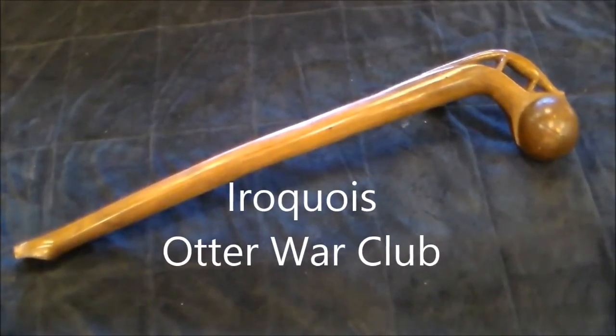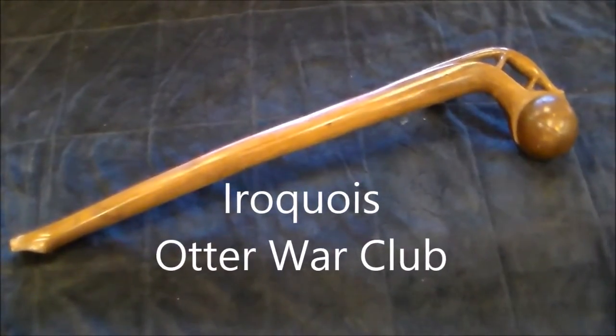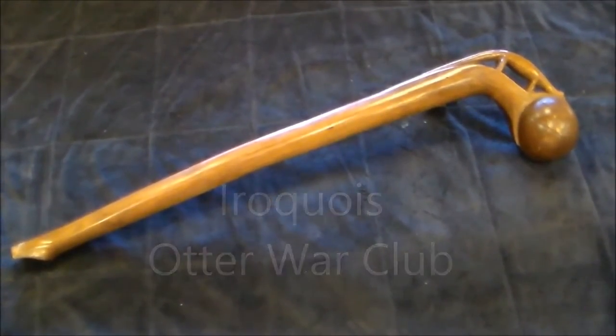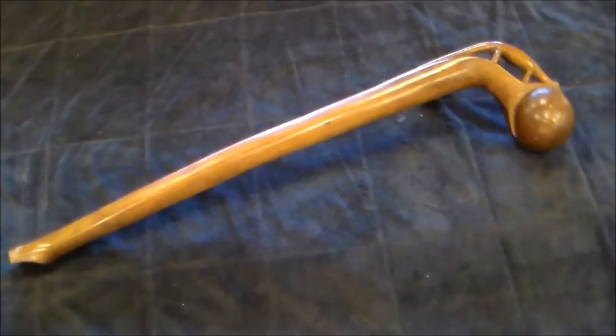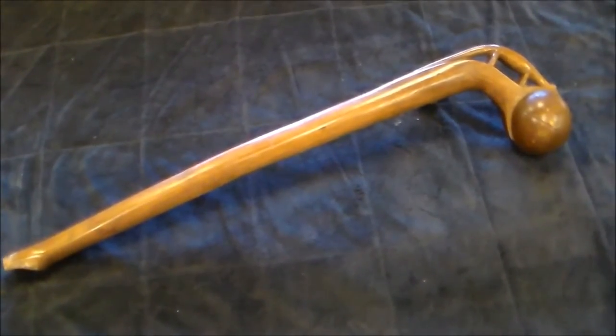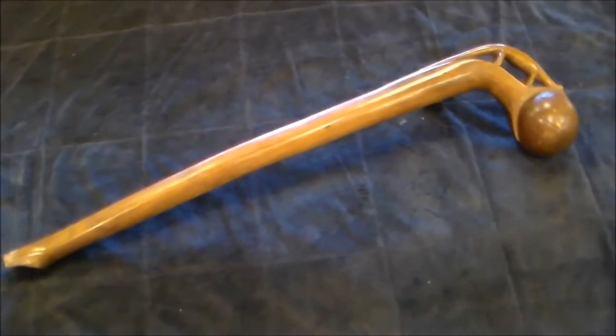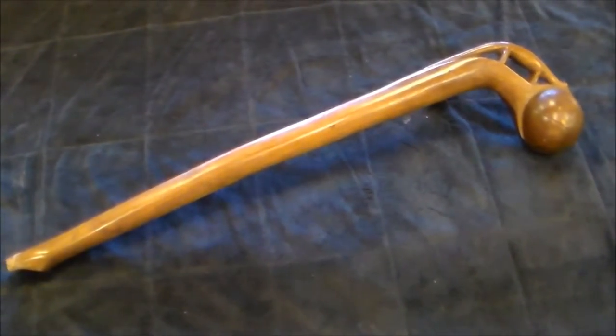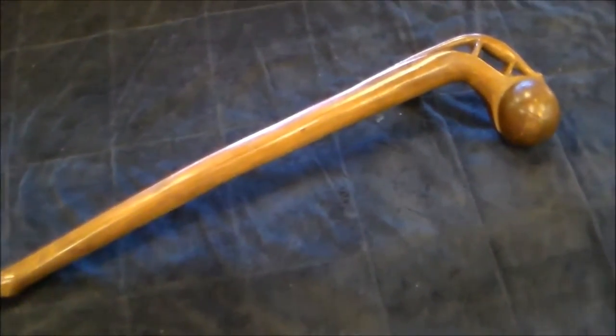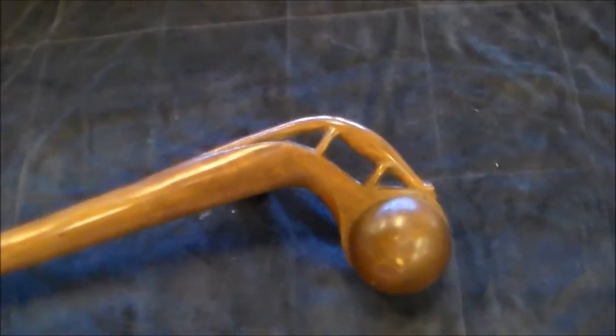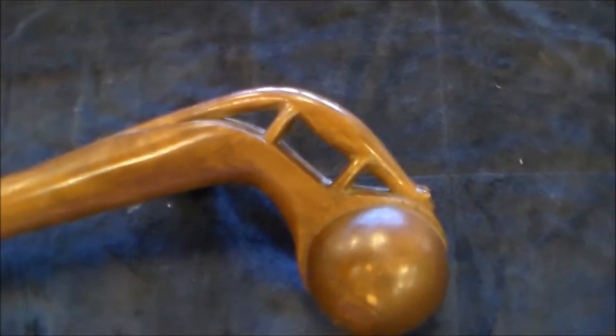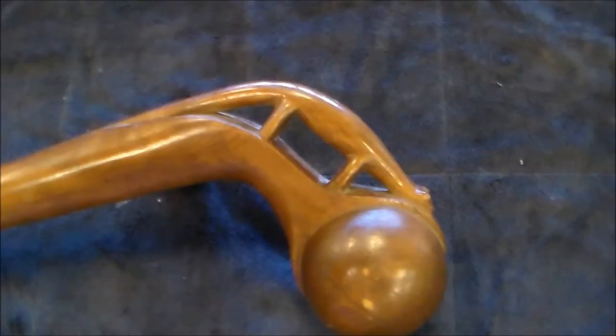What you're looking at is an Iroquois war club. This club originated around the late 1700s, early 1800s. It's called an otter war club because of the figure at the head of the club, and it is the otter.